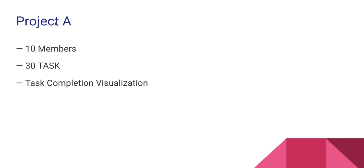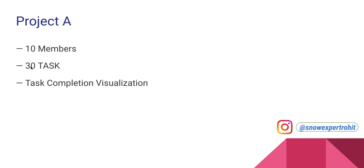Let's say you started a project called Project A and in this project you have 10 members. In those 10 members you have 30 tasks. You want to manage the project — distribute the tasks among the 10 members, complete three or ten tasks in the first stage, then complete twenty tasks in the second stage, something like that.